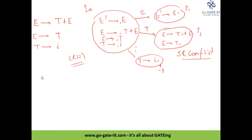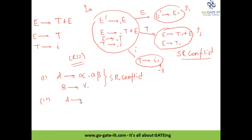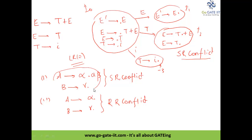There are certain rules to note. First: if a state contains both A → α•aβ (dot before terminal 'a') and A → γ• (dot at end), this shows a shift-reduce conflict. Second: if a state contains both A → α• and B → β• (two reduce items), this is a reduce-reduce conflict. If either of these kinds of states appear in your DFA construction, we can directly say the grammar is not an LR(0) grammar. These states are also called inadequate states.